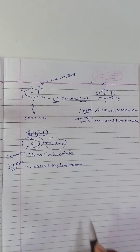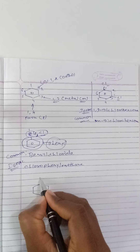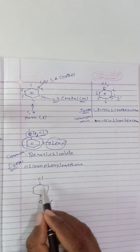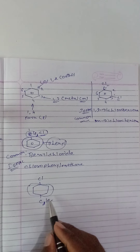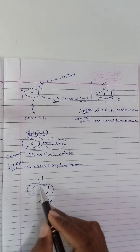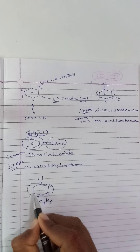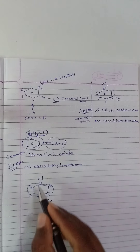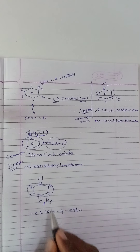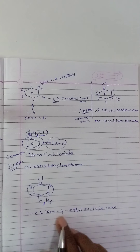Another structure: Cl and C2H5 on a cyclohexane ring. There is no double bond, so it is cyclohexane. Numbering one through six: on position one, chlorine — so 1-chloro. On position four, an ethyl group is present. The rest of the structure is cyclohexane. IUPAC name: 1-chloro-4-ethylcyclohexane.